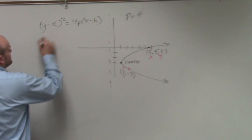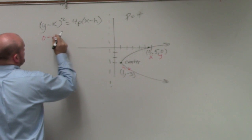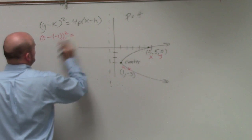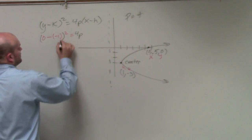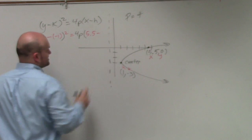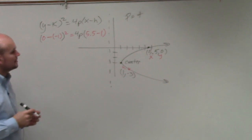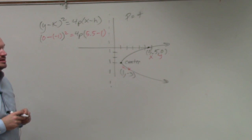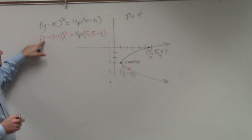So now I can plug in: 0 minus k, so that would be negative 1... equals 4p times x, which is 5.5, minus h, which is 1. Why is it minus the negative 1? It's y minus k.